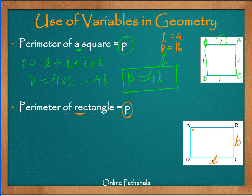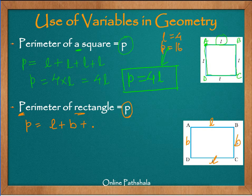We need to sum up the lengths of these sides. We write perimeter p. By the way, you can use any other variable instead of p — I select p because it is the starting letter for the word perimeter, just for convenience. So p equals: from A to B we cover l, from B to C we cover b, from C to D we cover length l, and from D to A we cover a length of b.